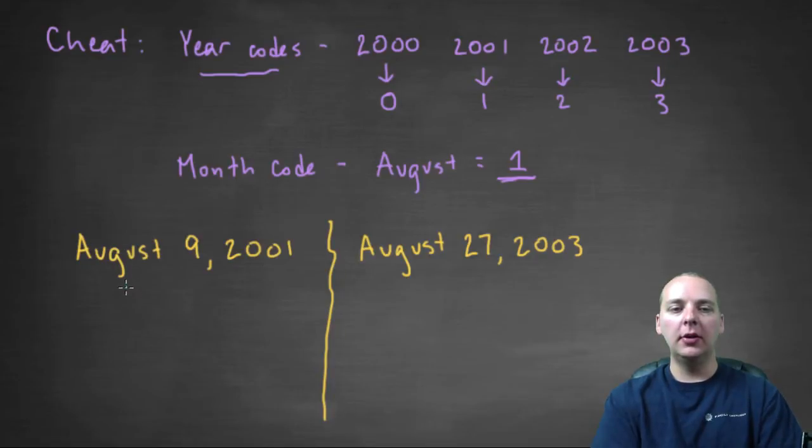The month code is August, so that's a one. Now, what about nine? What's the day code? This is the new stuff you just learned. The day code for nine should be two, right?